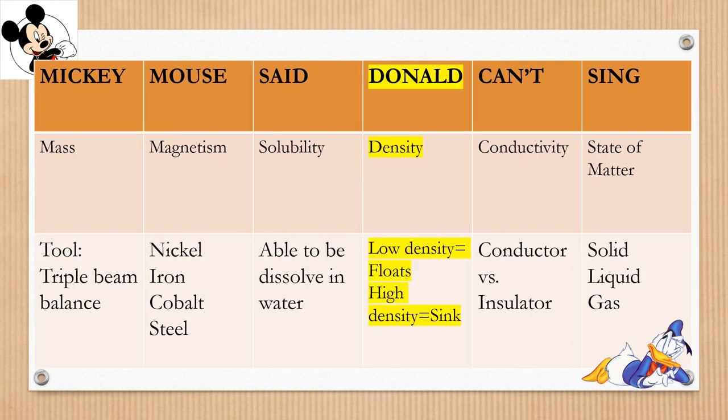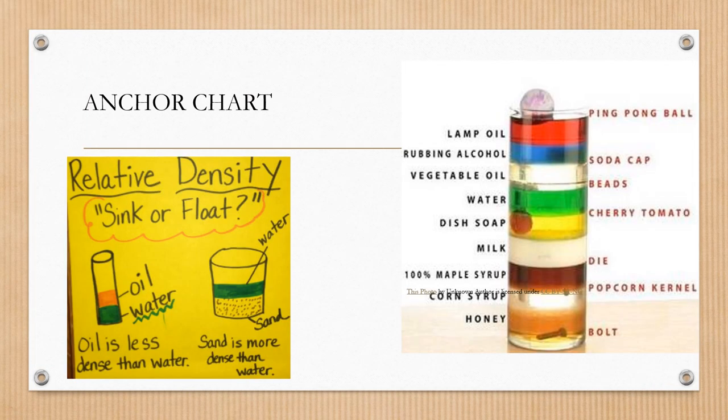Today we will focus on density. Remember, low density floats, high density sinks. Today we're going to be comparing different densities of different substances and objects. We're going to compare with the density of water. The question that you need to ask yourself is: is this object sinking or floating? If the object is sinking, it will have more density than water.